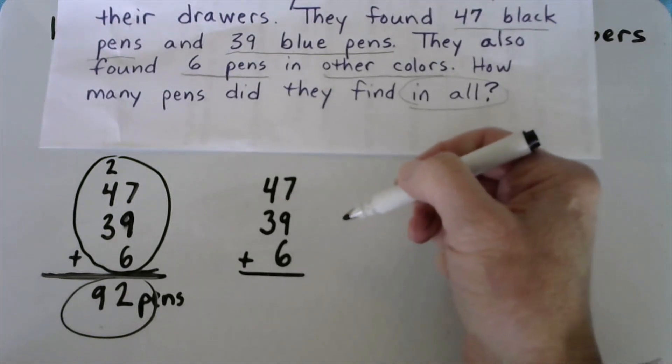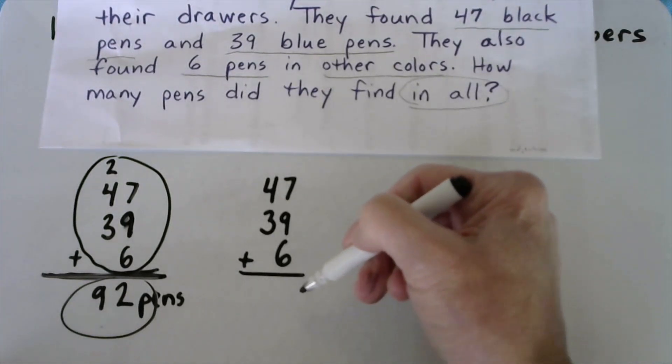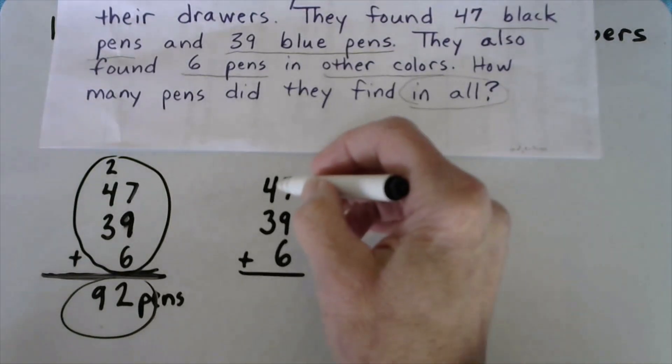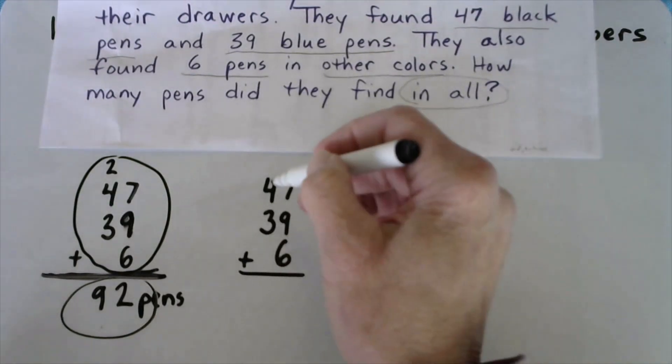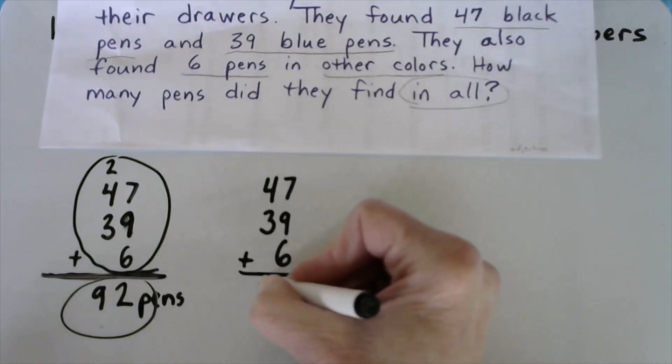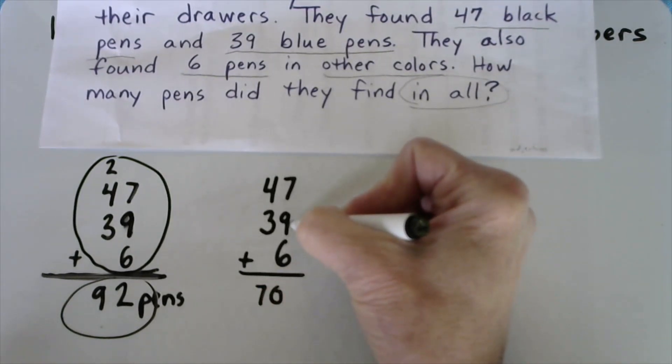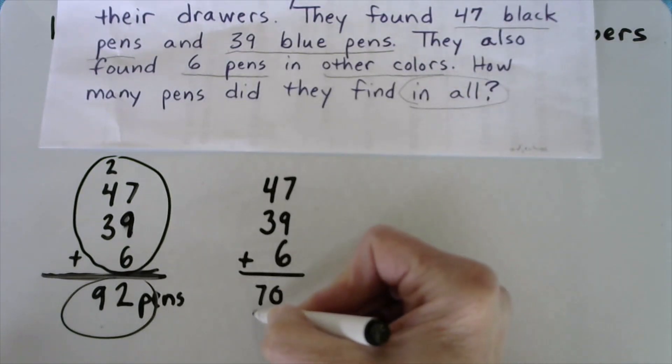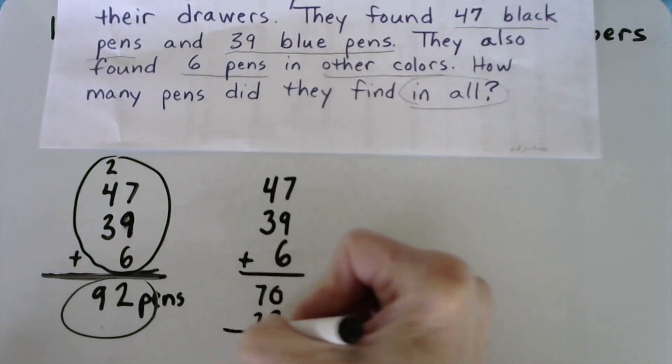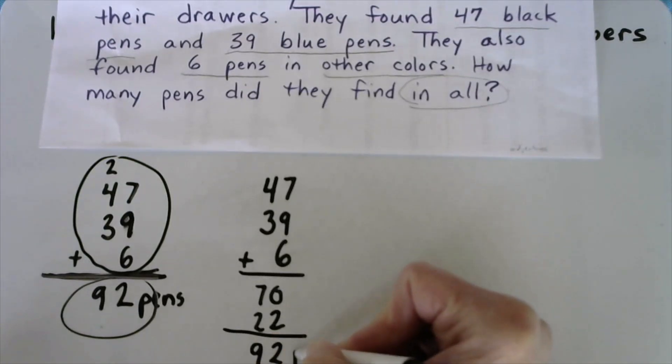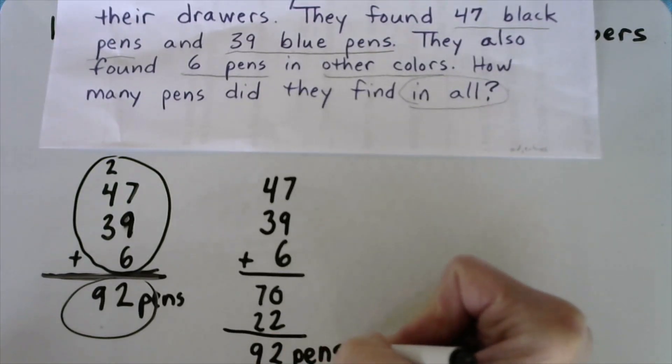With partial sums, instead of starting with the ones, you start with the greatest values. So 40 and 30, we're going to start with that, 40 and 30 is 70, 7 plus 9 is 16, plus 6 is 22, and when I add 70 and 22, I get 92, 92 what, 92 pens.